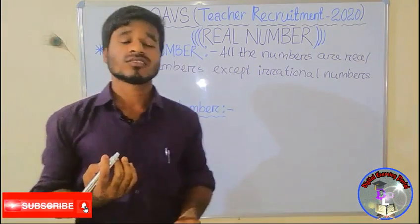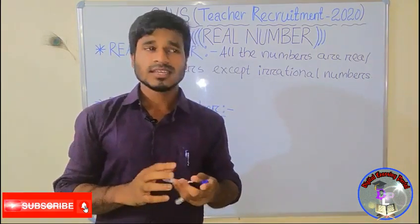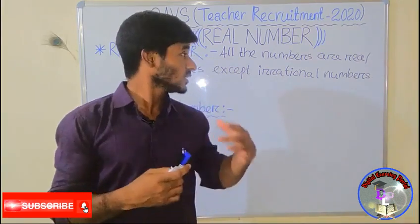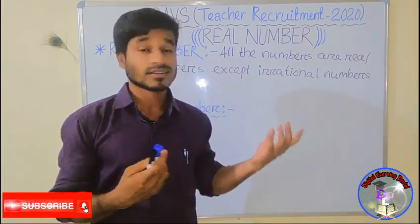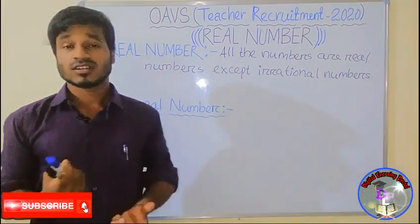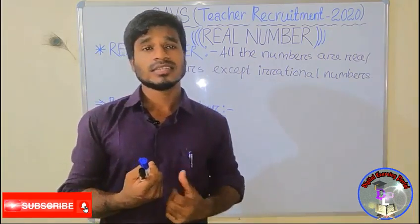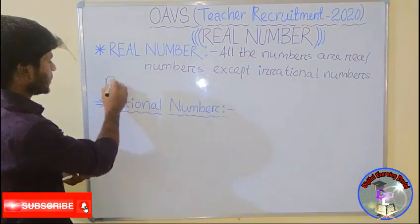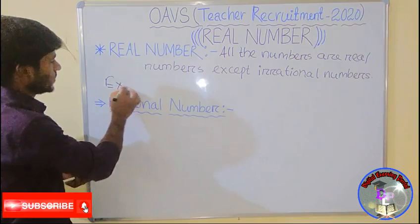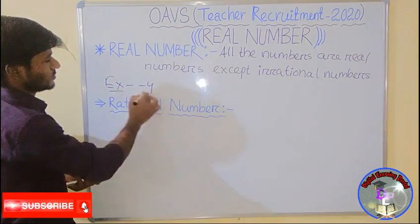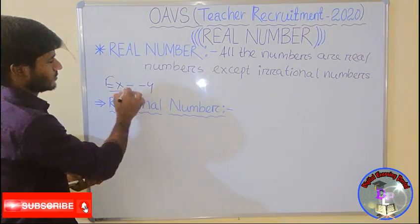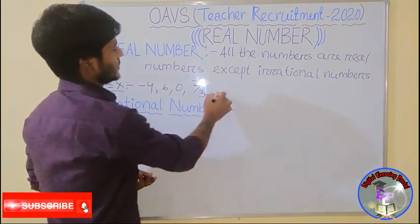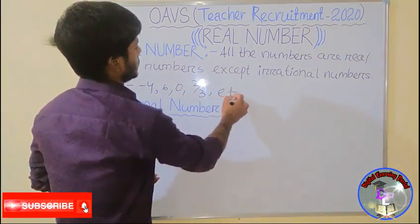That means all the numbers we will see in this category — we can belong to natural numbers, whole numbers, etc. So let's see, examples will be: minus 4, 16, 0, 2 by 3, etc.